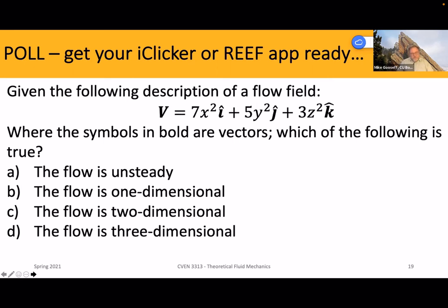The last question: given a three-dimensional flow field with components x-squared i-hat, 5y-squared j-hat, and 3z-squared k-hat (where bold symbols are vectors), which of the following is true: the flow is unsteady, one-dimensional, two-dimensional, or three-dimensional? The flow is three-dimensional — it's not unsteady because none of these have a function of T. So it must be steady flow, but the velocity does change with X, Y, and Z location. The flow is three-dimensional because we have the i, j, and k components all included.